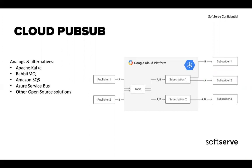There are a lot of open source alternatives, like Apache Kafka, RabbitMQ, ZeroMQ, and so on. All clouds also have alternatives, like Amazon SQS and Azure Service Bus. The pricing strategy: you will pay for transferred data per gigabyte.